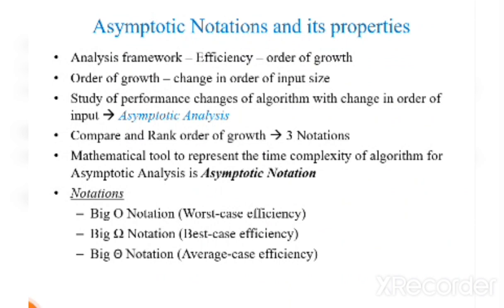The next topic is asymptotic notation and its properties. Asymptotic means a line tends to converge to a curve, which may or may not eventually touch the curve — it is a line that stays within bounds. Time and space complexity is measured in terms of asymptotic notations. Asymptotic notation can describe time and space complexity accurately for larger instance characteristics for a given algorithm, providing upper or lower time and space bounds.